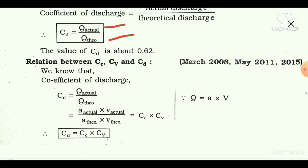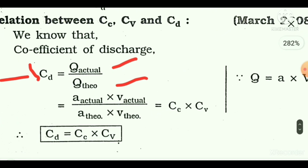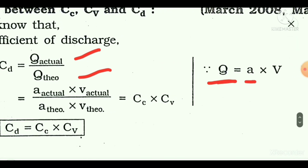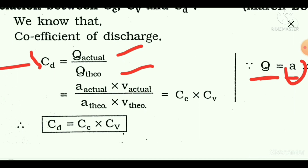What is the relation between Cc, Cv, and Cd — that is, the coefficient of contraction, coefficient of velocity, and coefficient of discharge? The coefficient of discharge is the ratio of actual discharge to the theoretical discharge. As we know, discharge equals cross-sectional area multiplied by velocity of flow. So Q_actual equals actual area into actual velocity, and Q_theoretical equals theoretical area into theoretical velocity.